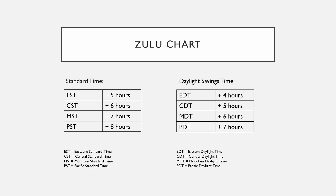Once you recognize which time zone applies, we move on to the Zulu chart. This chart is divided into two parts: the standard time chart and the daylight saving time chart. For Eastern Standard Time you add five hours; for Central Standard Time you add six hours, and so on. Similarly, for the daylight saving time chart, Eastern Daylight Time you add four hours, Central Daylight Time you add five hours, and so on.